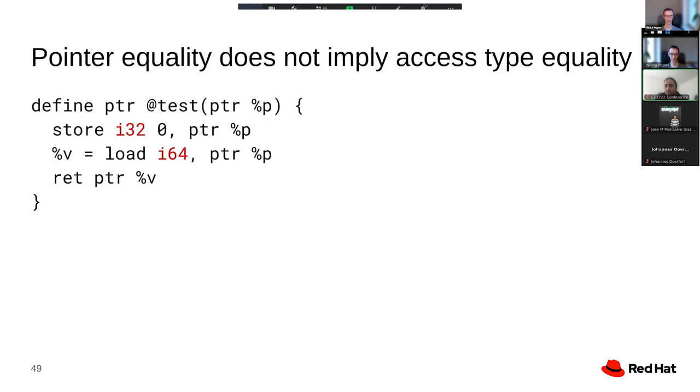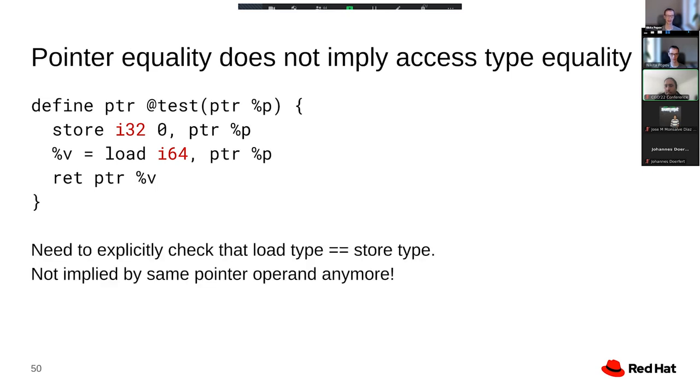But there are some significant exceptions to that, where code makes assumptions that no longer hold when opaque pointers are enabled. The main one is illustrated here, which is that code currently assumes that if you have two accesses on the same exact pointer value, then those accesses will use the same type, which is true for typed pointers, but not true for opaque pointers. In this example, we have a store of an i32 value and then a load of an i64 value, and we have to make sure that store to load forwarding is not performed in this case.